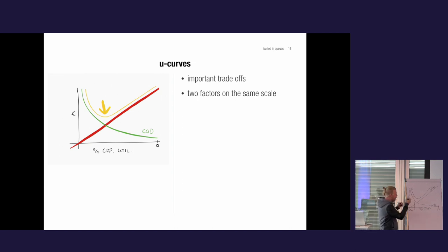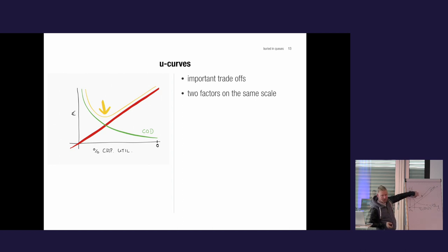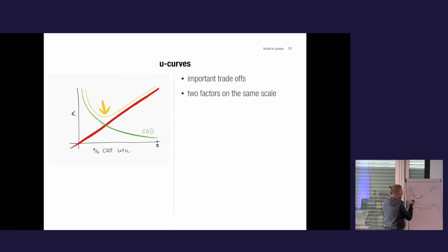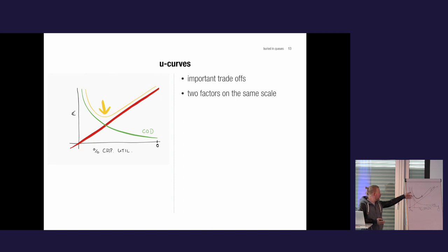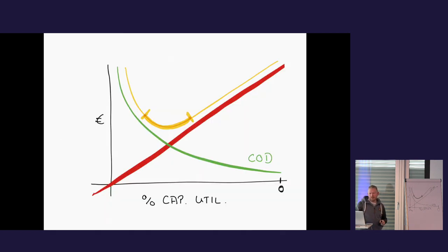Important trade-offs tend to have U-curves, and those U-curves have something very interesting — you have a wide area of optimization. Somewhere in the middle is an optimal cost ratio — the lowest total cost if you take both factors together. You don't have to hit the exact point. Nevertheless, you should start to look at what it costs, in order to put both on the same scale in euros — that's something tricky, but it can be done.